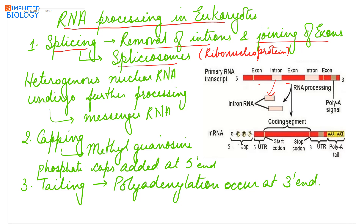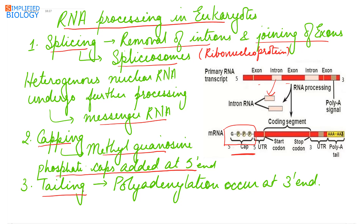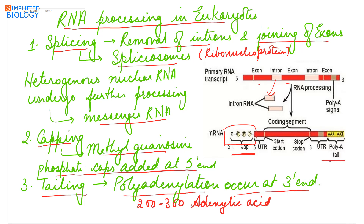Further processing occurs on the heterogeneous nuclear RNA to form messenger RNA. The next step is capping, where methyl guanosine phosphate caps are added at the 5 prime end. The third step of processing is tailing, where polyadenylation occurs at the 3 prime end — meaning 200 to 300 adenyl acid (adenine nucleotides) are added towards the 3 prime end.